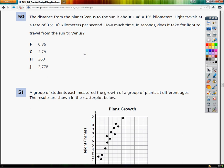Alright, this is a TCAP practice test for grade 8, the math one. This is question number 50. The distance from the planet Venus to the Sun is about 1.08 times 10 to the 8th kilometers. Light travels at a rate of 3 times 10 to the 5th kilometers per second. How much time in seconds does it take for the light to travel from the Sun to Venus?